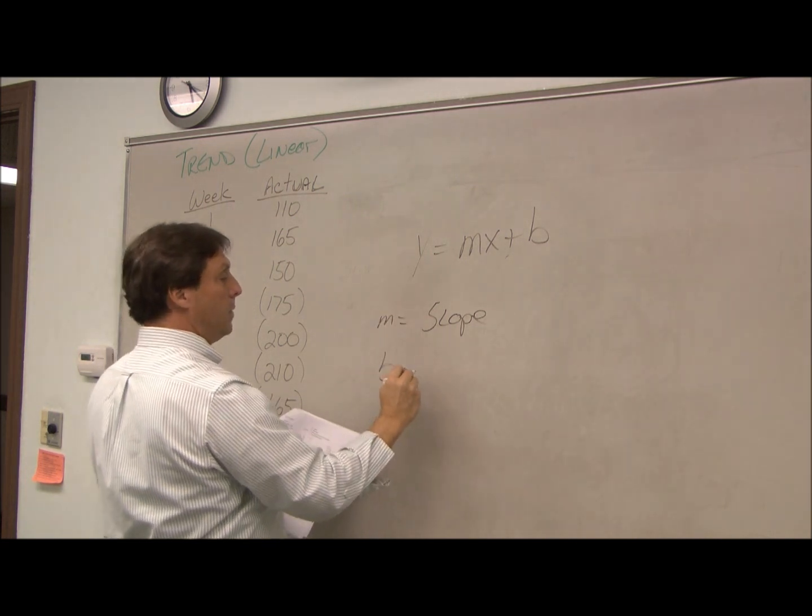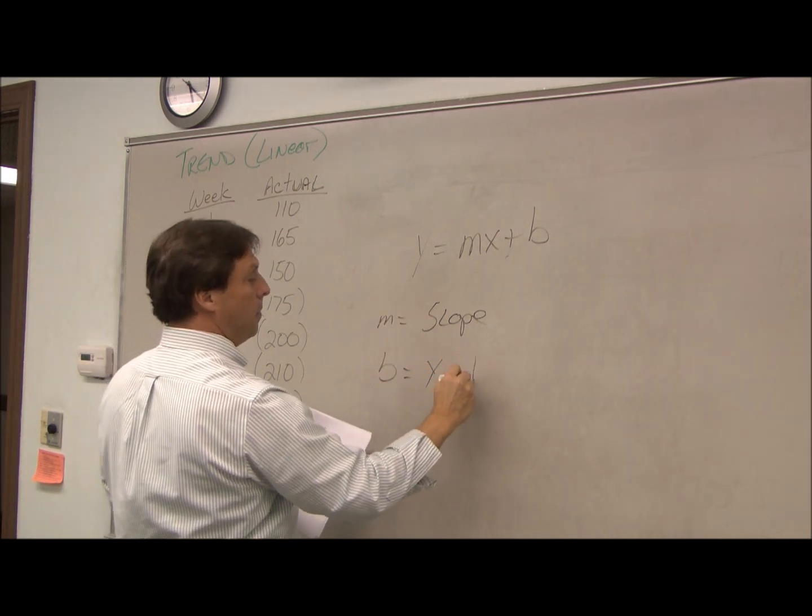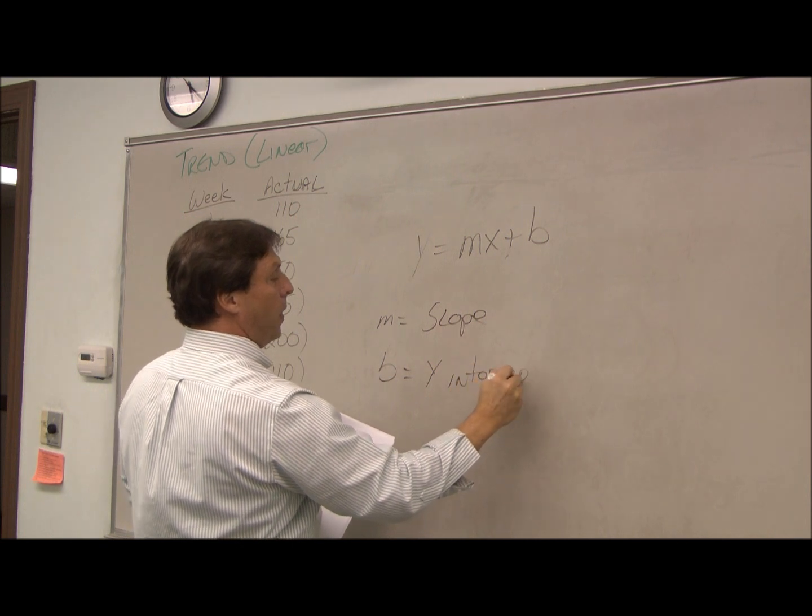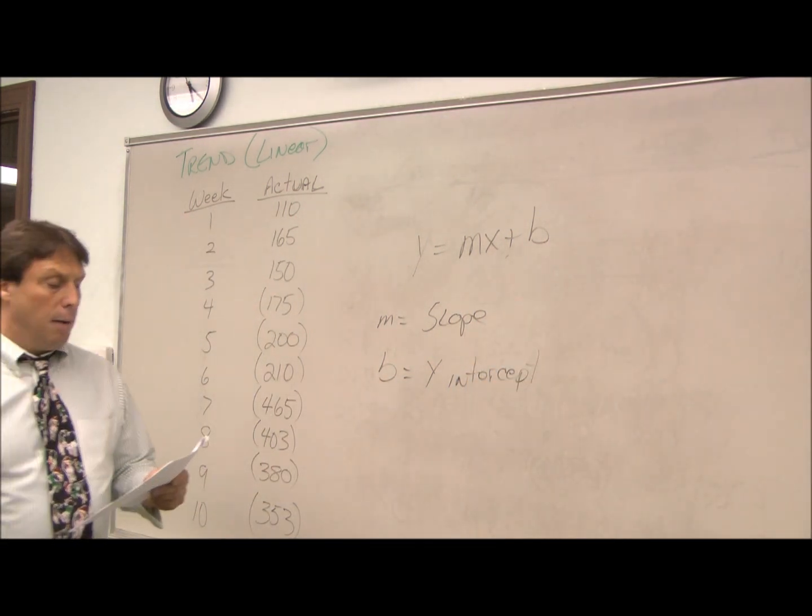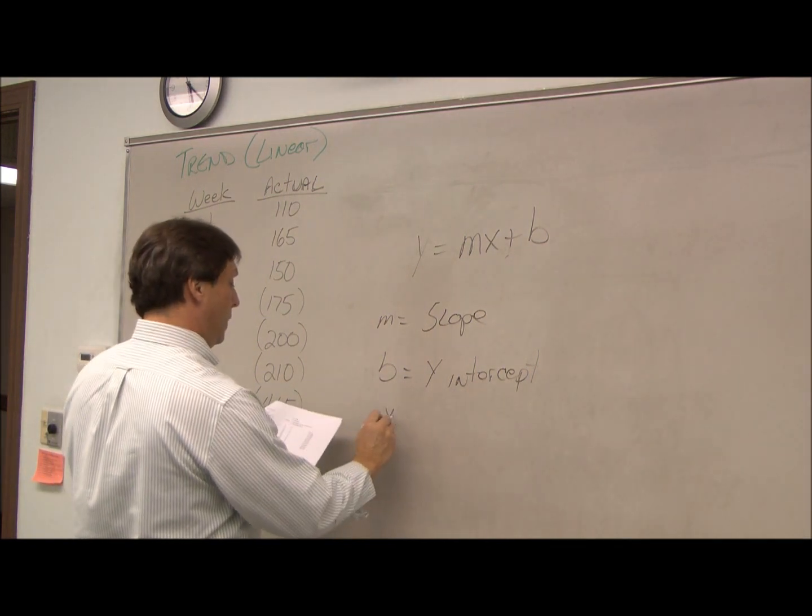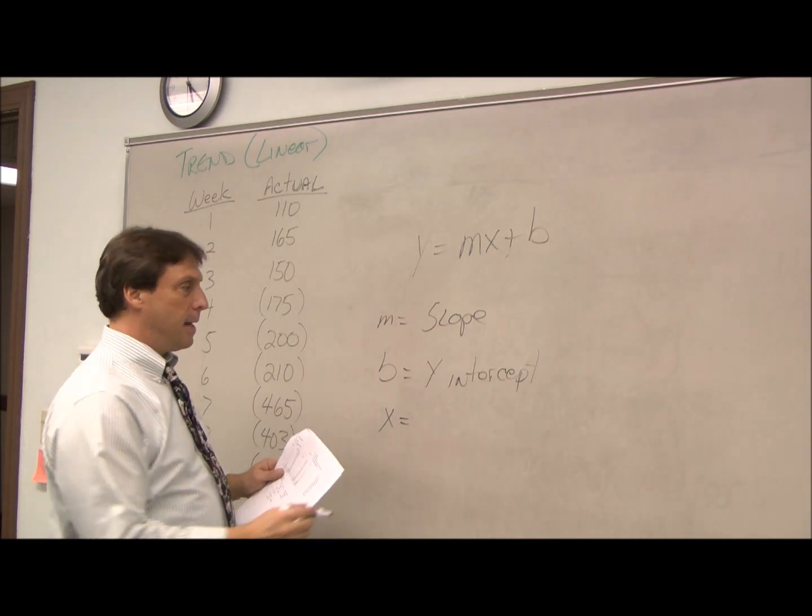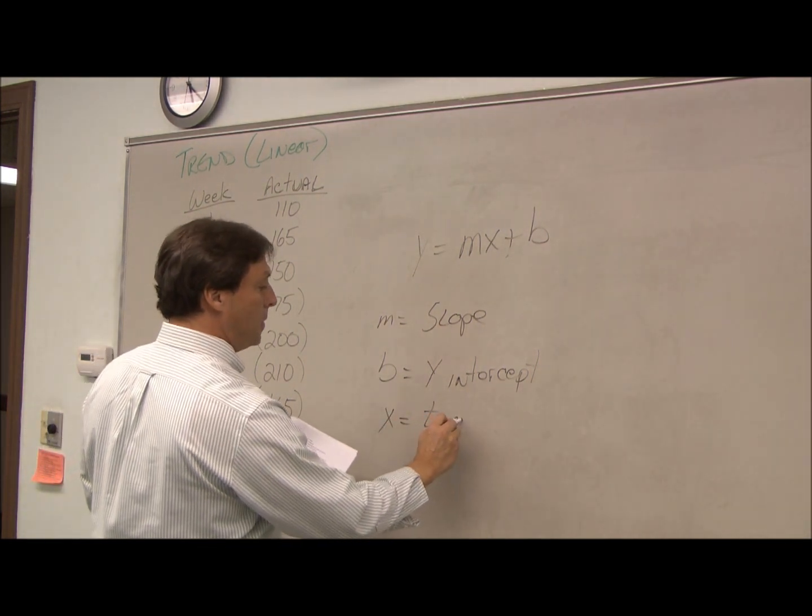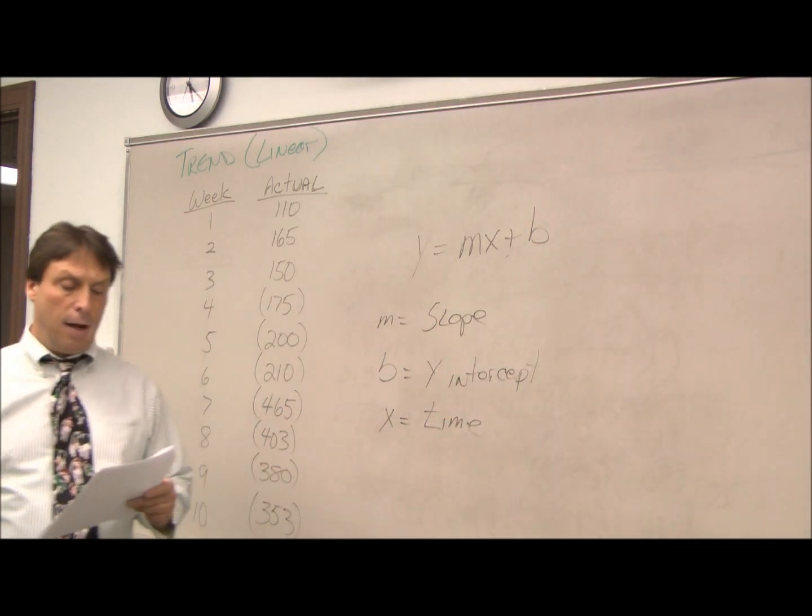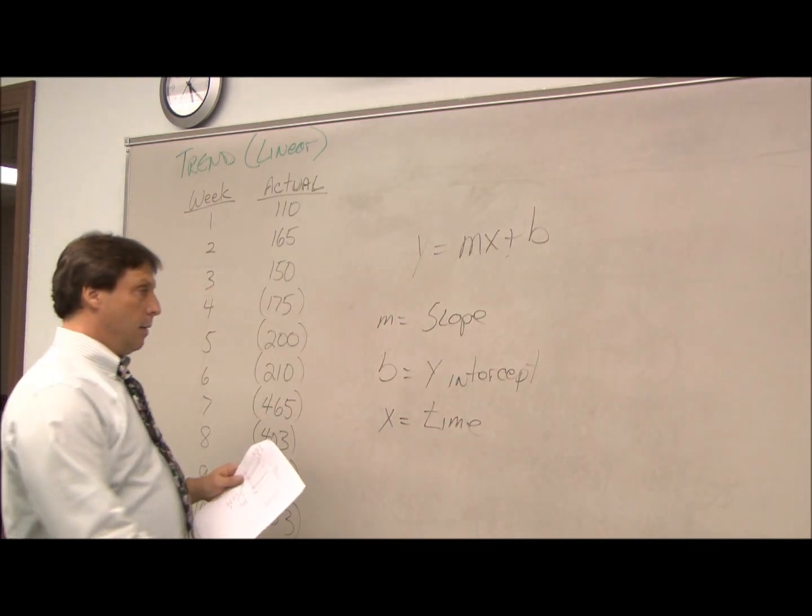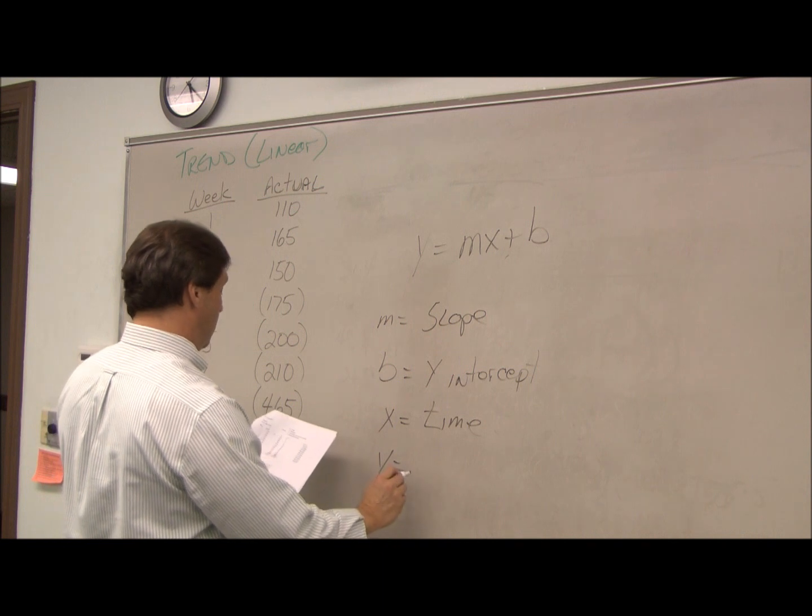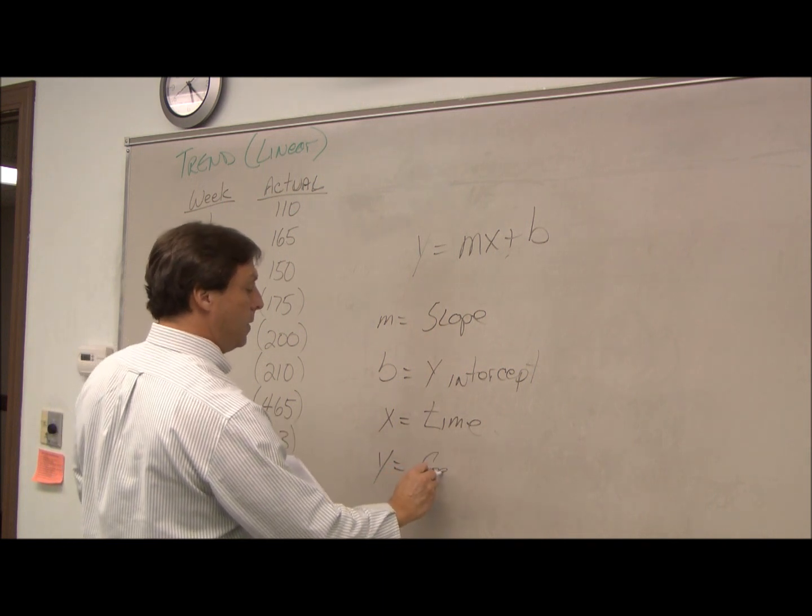B is your y-intercept, or where it crosses the y-axis. X, in this case, is the x-axis, but we're doing time series, so it represents time. And the y in this equation is actually our forecasted demand.